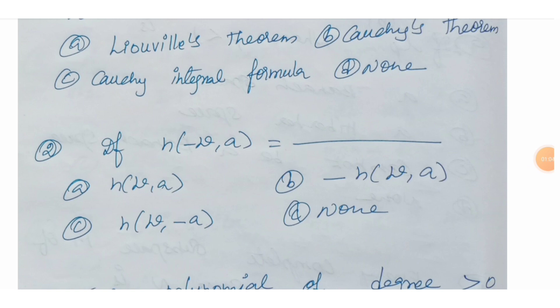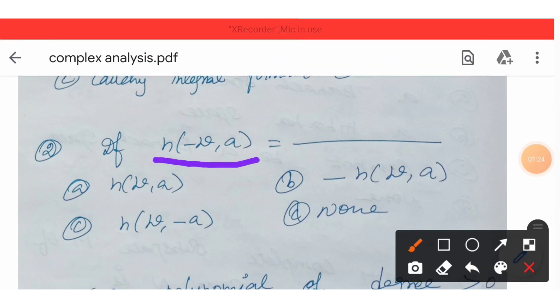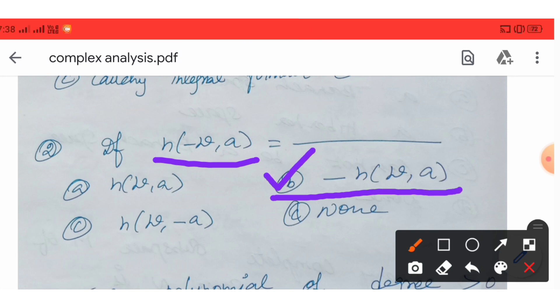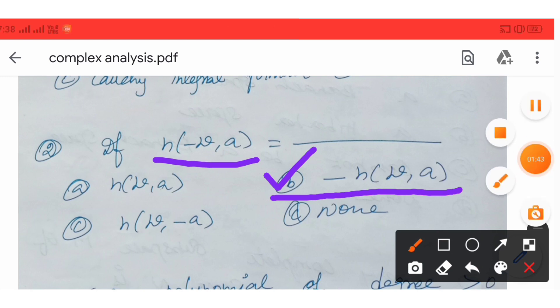Next question: If n of minus gamma, a equals — Option A: n(γ, a), Option B: minus n(γ, a), Option C: n(γ, -a), Option D: none of these. Option B is the correct answer. n(-γ, a) = -n(γ, a).